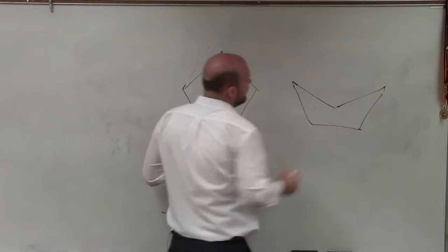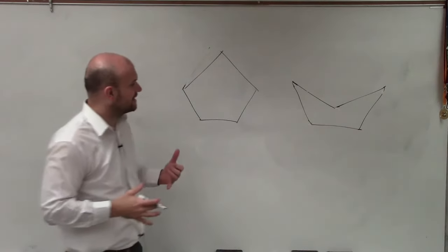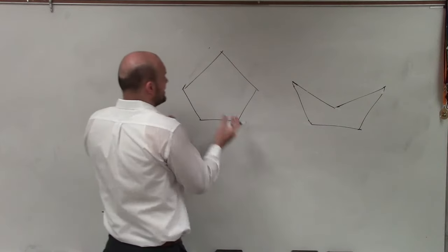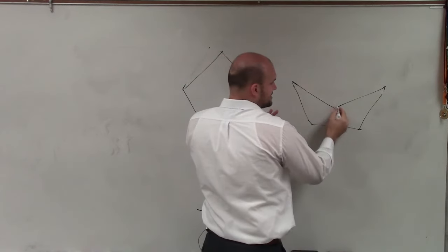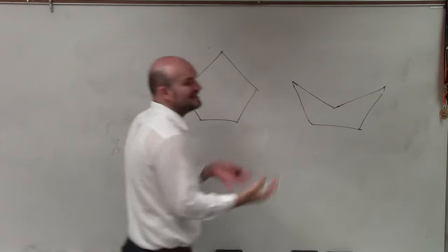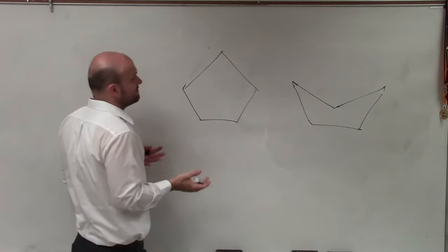OK, so there's a way that we can determine if it's convex or concave. But one thing you can notice about these is all these vertices are kind of pointing out, where this one, you can see this vertex is kind of pointed back in to the polygon. And that's exactly the definition that we look to.